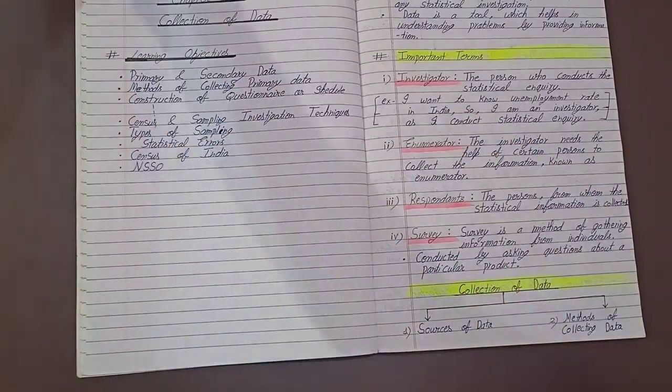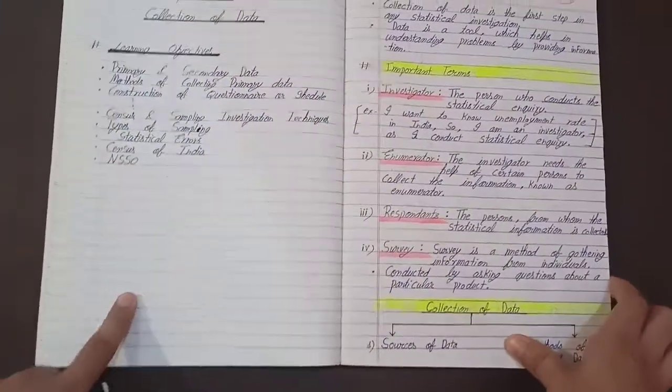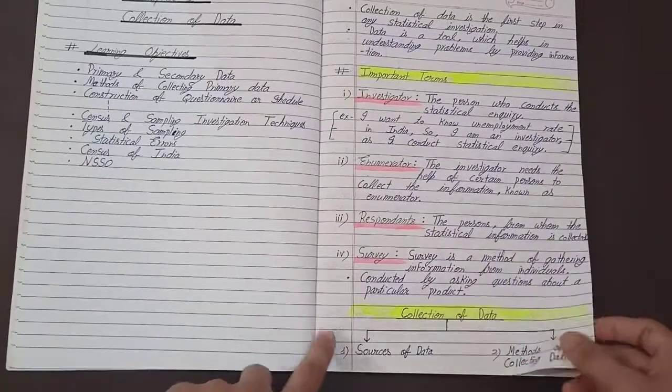Here are the learning objectives, or you can see you can also write down these objectives. So firstly we have important terms, then we have collection of data.